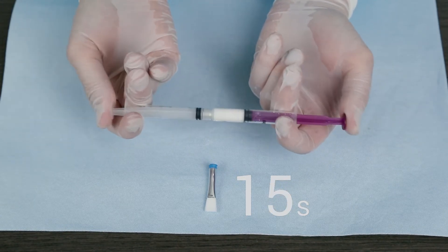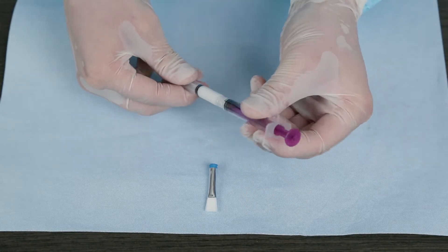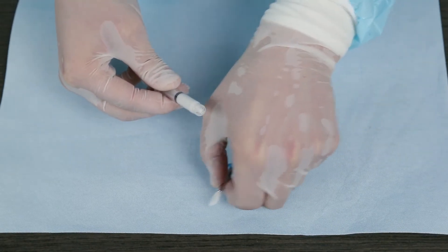Once mixed, push all the liquid into the larger male syringe. Disconnect the two syringes and attach the sterile application brush tip.